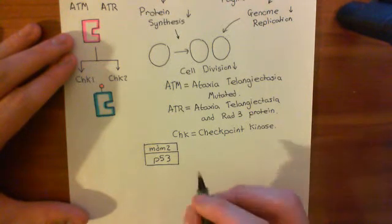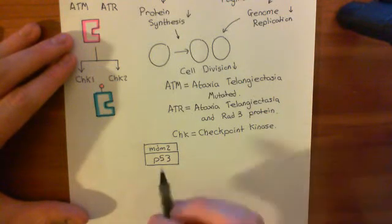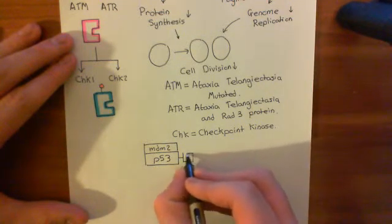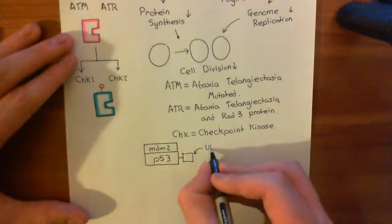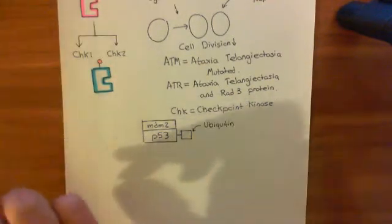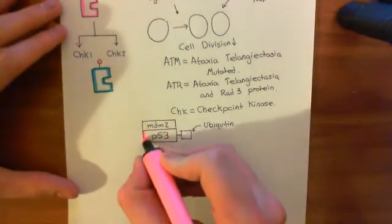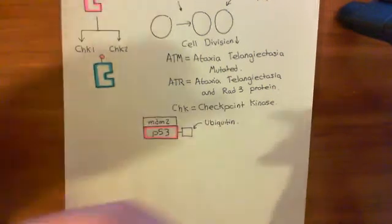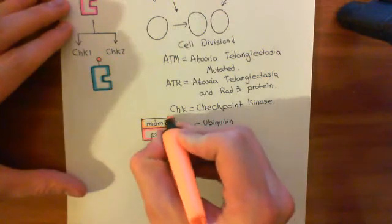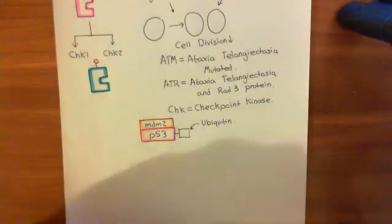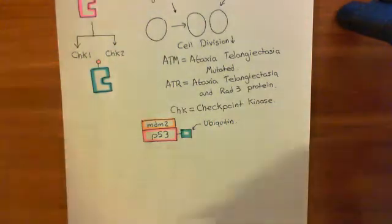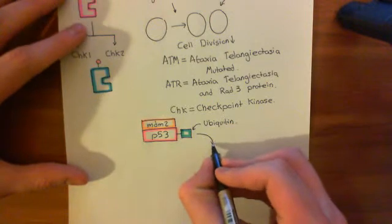To add insult to injury, the MDM2 now starts to ubiquitinate the P53 enzyme. So it's going to stick ubiquitin — which I'll denote as this square here — onto the P53. Once you've had ubiquitin added onto you, you are targeted to the proteasome for degradation.